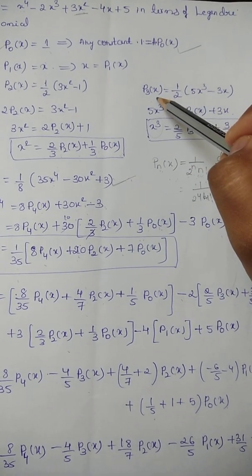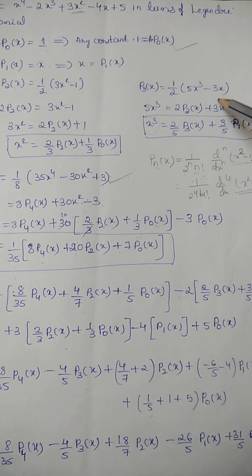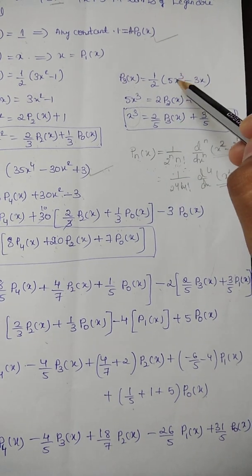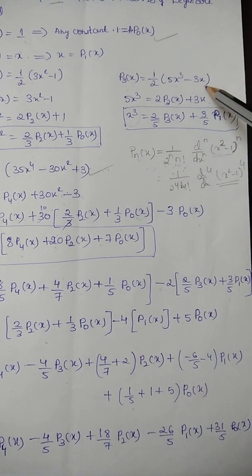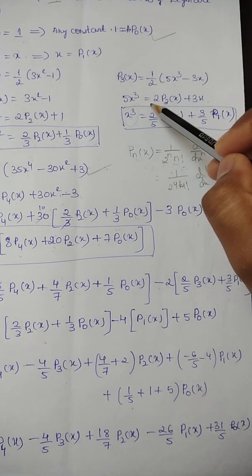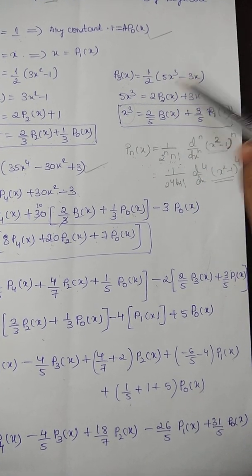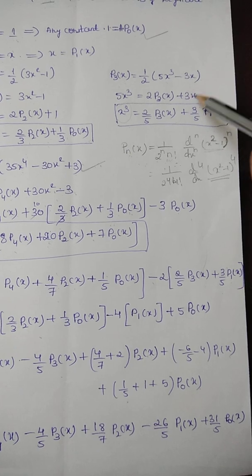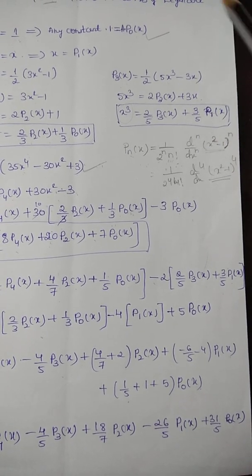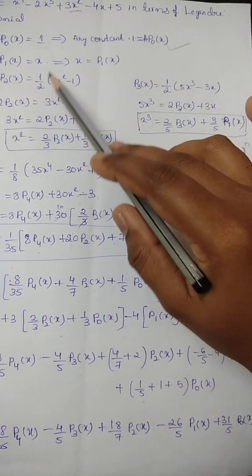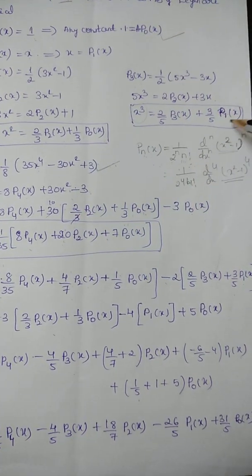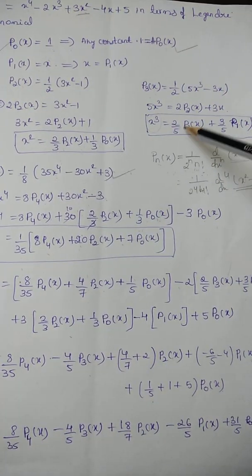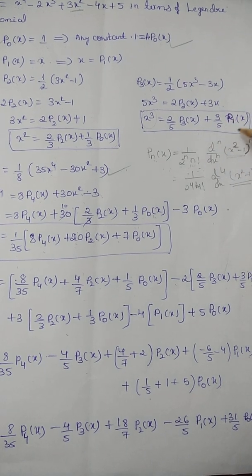Now for P₃(x): it equals (1/2)(5x³ - 3x). Multiplying both sides by 2: 2P₃(x) = 5x³ - 3x. So 5x³ = 2P₃(x) + 3x. Rearranging: x³ = (2/5)P₃(x) + (3/5)x. In place of x we write P₁(x), so x³ = (2/5)P₃(x) + (3/5)P₁(x).